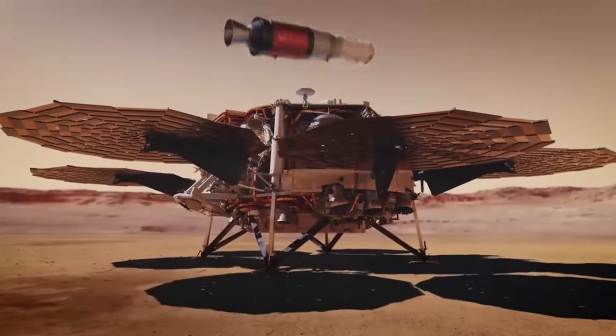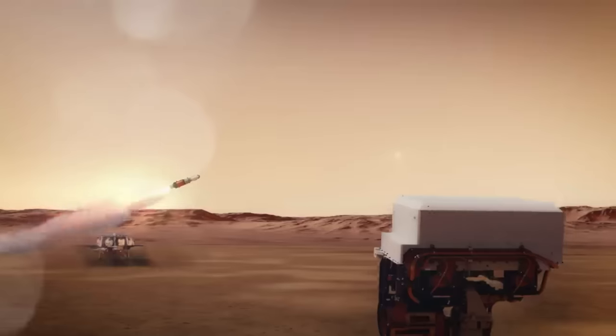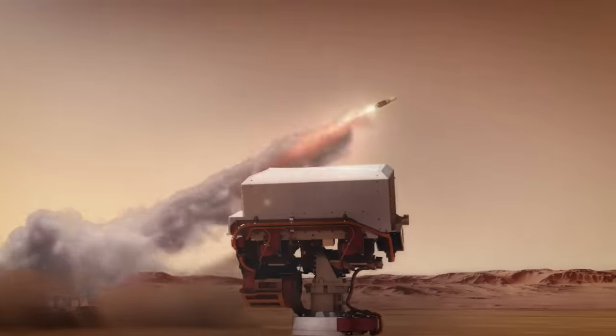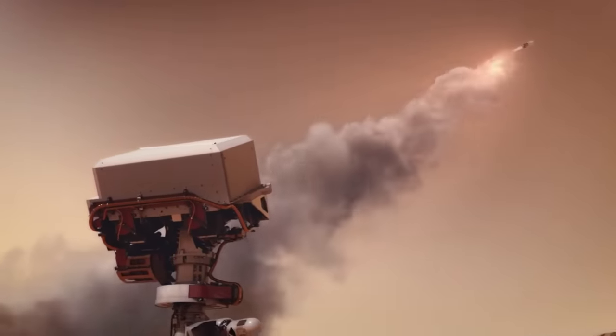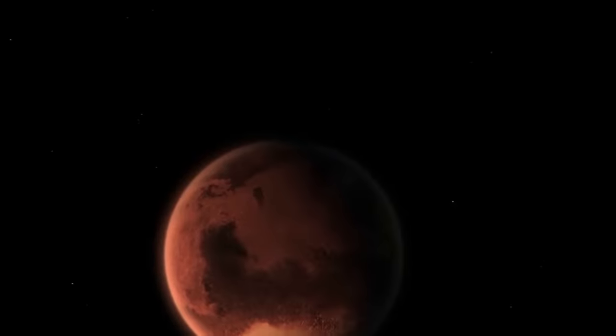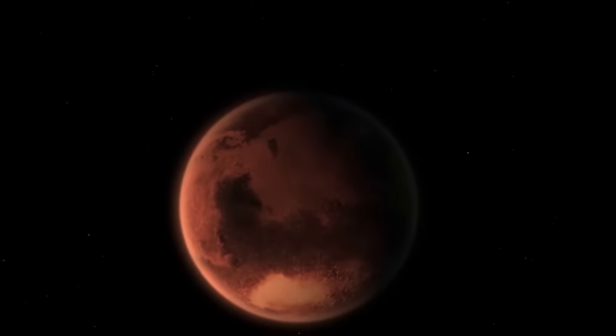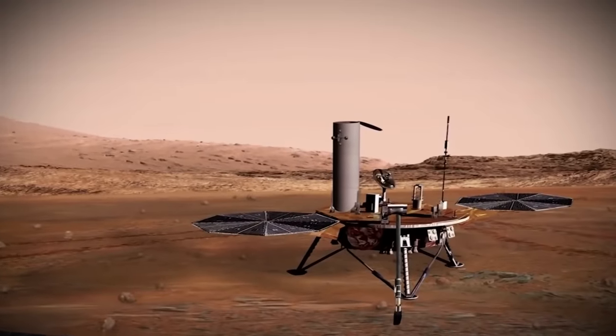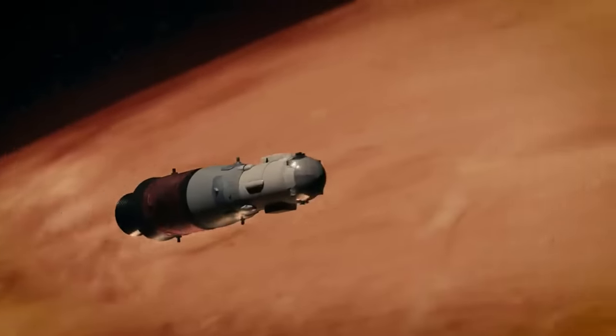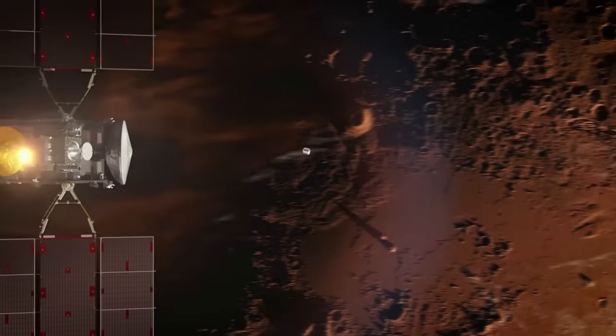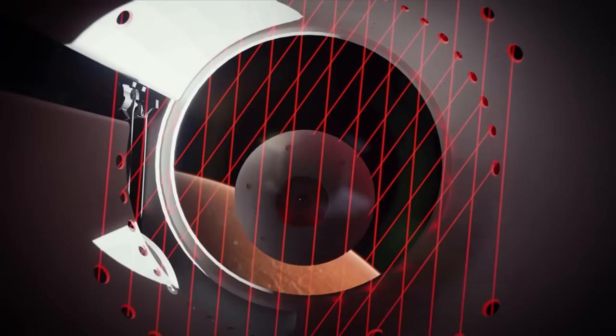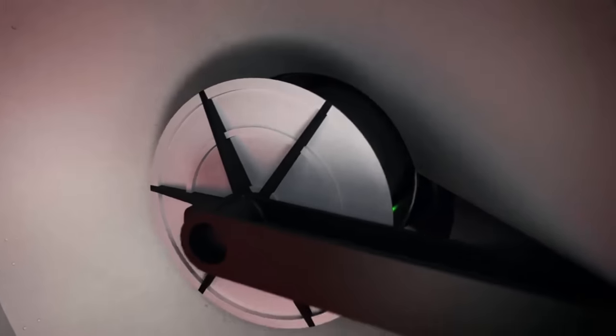This specific stage in this complex process is immensely important and would transport the sample tubes containing Martian rock, atmosphere, and loose surface material into orbit around Mars. The rocket and enclosed sample container would travel to Mars inside the sample retrieval lander and would remain onboard until loaded with samples and prepped for launch. Once the sample container reaches Mars orbit, ESA's Earth Return Orbiter or ERO would capture and store it in a secure containment capsule for safe delivery to Earth.